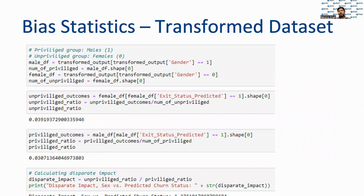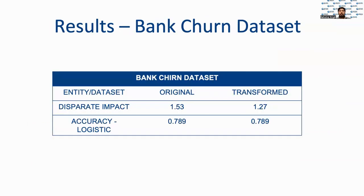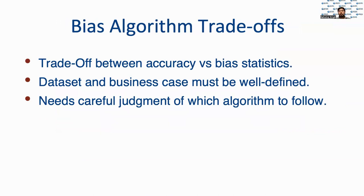Computing the updated disparate impact ratio, we see that the value has reduced, but it is still higher than the recommended value of 1.25. Finally, we summarize the results and observe that we reduced the disparate impact of the dataset by 0.26 points while keeping the accuracy intact. As seen from the results, though the disparate impact values improved, the accuracy remains the same. This will not be the case every time, and often we need to make a trade-off as accuracy may reduce after applying the bias algorithms.